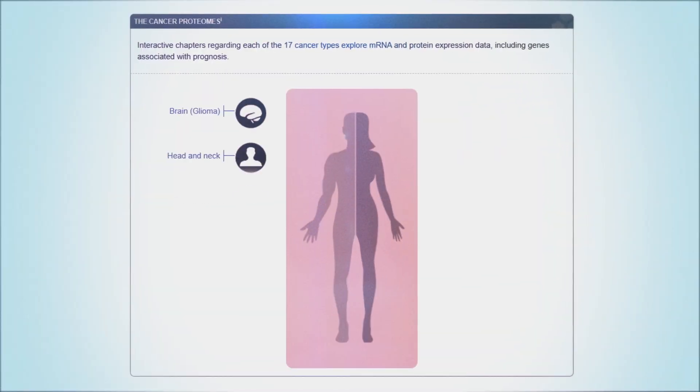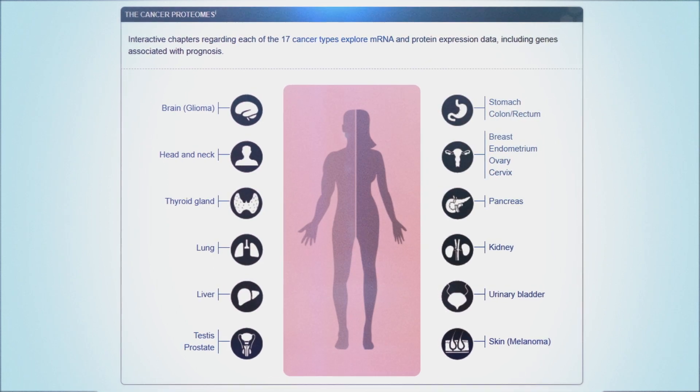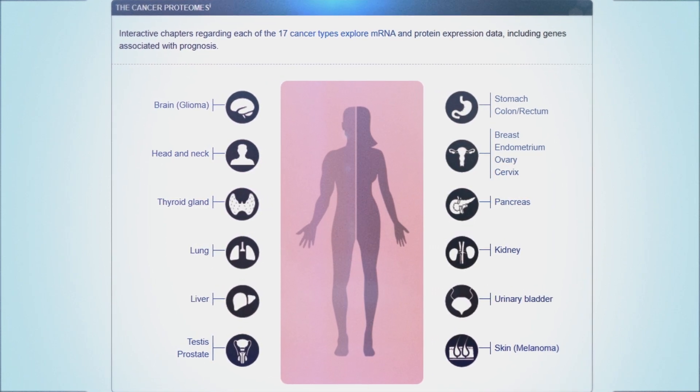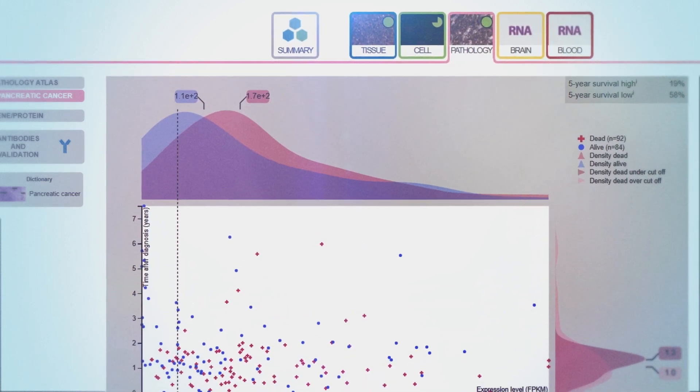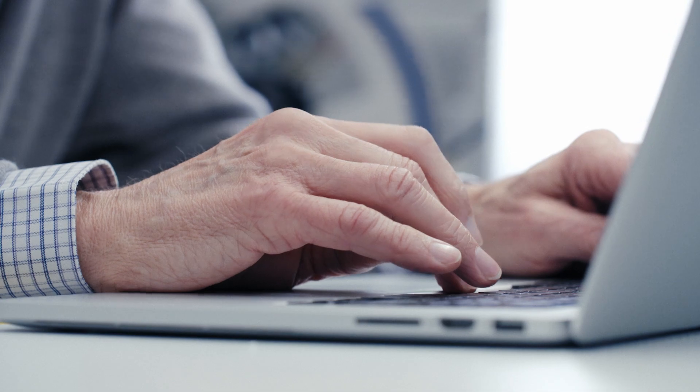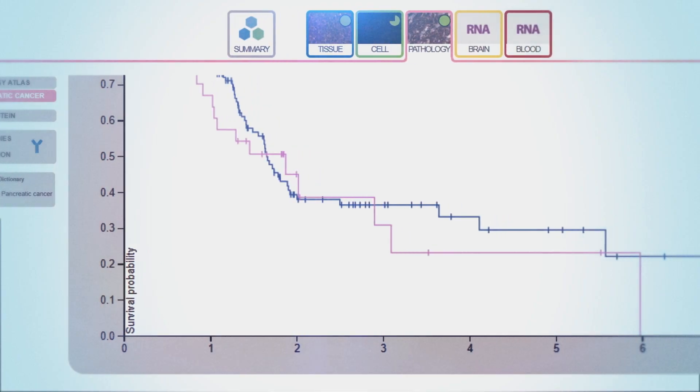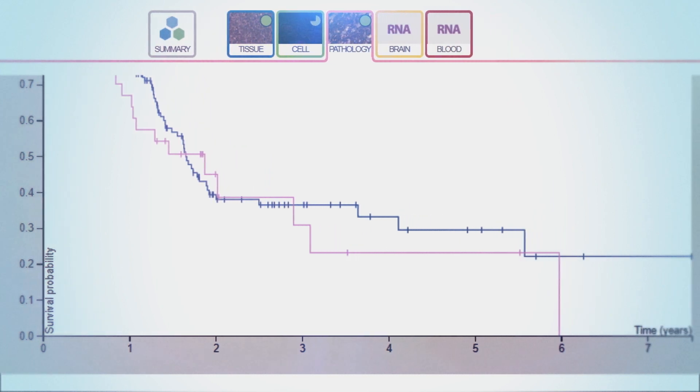The pathology atlas shows the effect of protein levels for the survival of patients with different cancers. The results are presented as survival plots, and scientists can explore the relationship between the levels of a particular protein in a tumor with the expected survival of the corresponding patient.